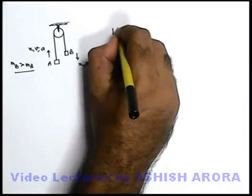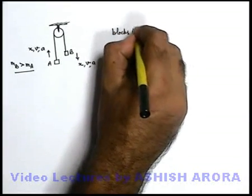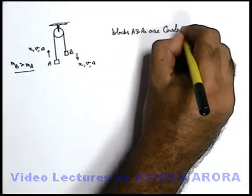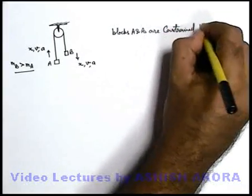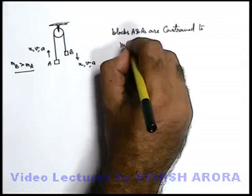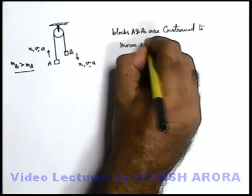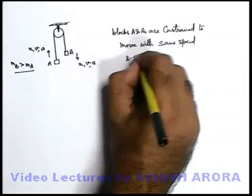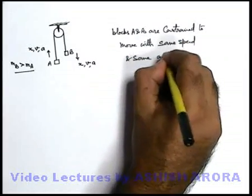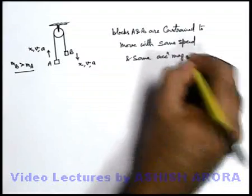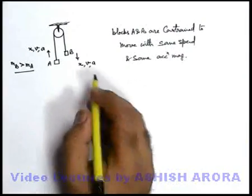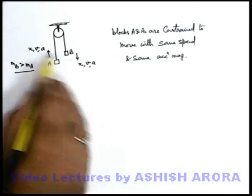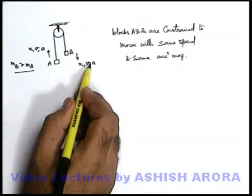So here we can say blocks A and B are constrained to move with the same speed and the same acceleration magnitude. We can simply say whatever is the relation among their displacements, the same relation will exist between their speeds as well as the magnitude of acceleration.